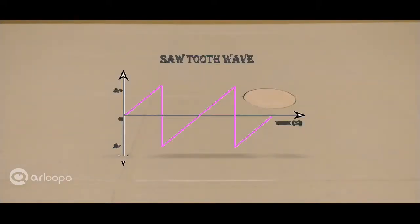A sawtooth wave is a non-sinusoidal waveform. It is named based on its resemblance to the teeth of a plain-toothed saw, like the one with the serrated edge.